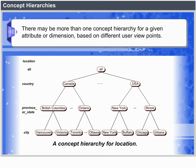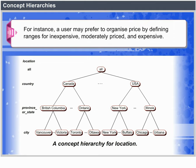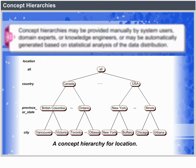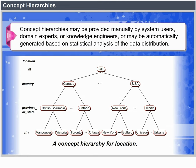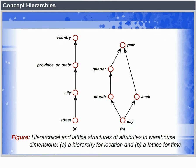There may be more than one concept hierarchy for a given attribute or dimension based on different user viewpoints. For instance, a user may prefer to organize price by defining ranges for inexpensive, moderately priced and expensive. Concept hierarchies may be provided manually by system users, domain experts or knowledge engineers, or may be automatically generated based on statistical analysis of the data distribution. Figure shows hierarchical and lattice structures of attributes in warehouse dimensions: a hierarchy for location and a lattice for time.